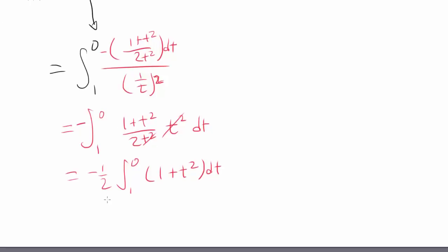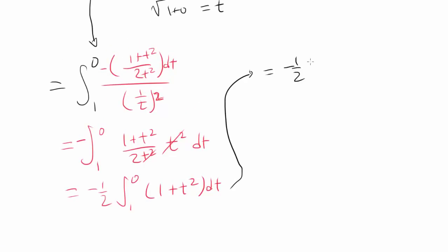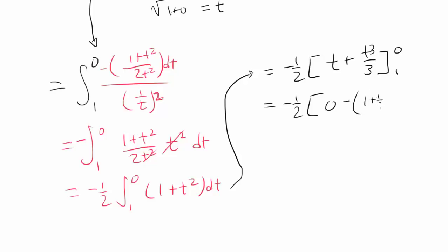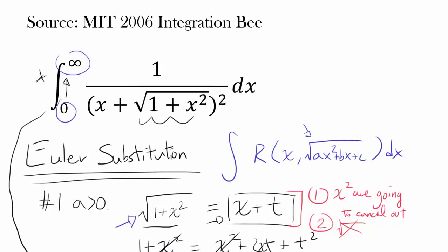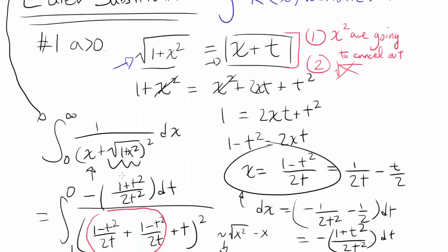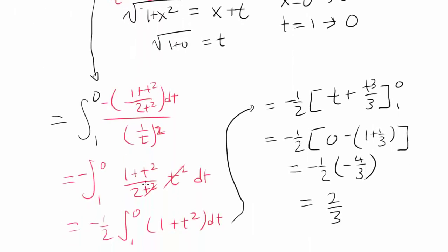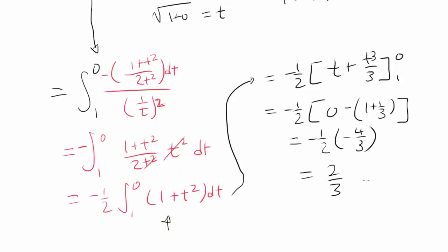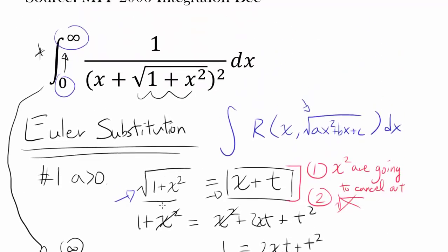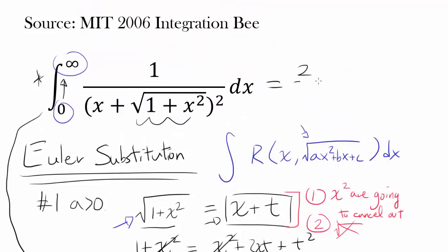Look at how beautiful this expression is — we can actually do something with it. We have negative one half times the integral from 0 to 1 of (1 plus t²) dt, which equals negative one half times [t plus t³/3] from 0 to 1. Plugging in 0 gives zero; plugging in 1 gives 1 plus one third, which is four thirds. So we get negative one half times negative four thirds, which equals two thirds. Our final answer to this integral is two thirds.